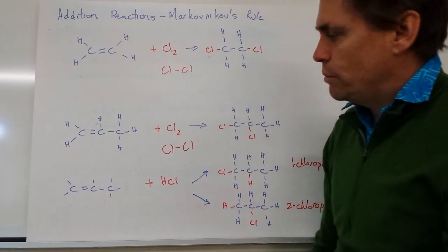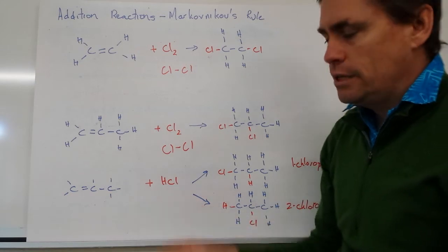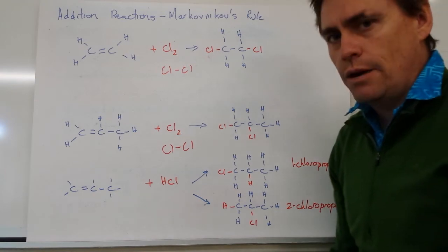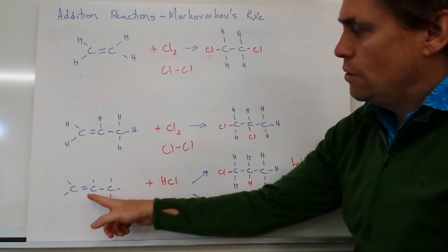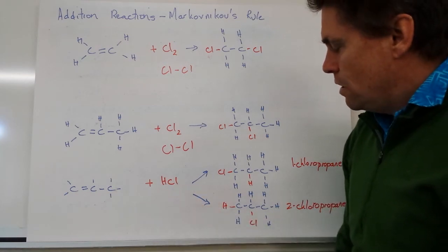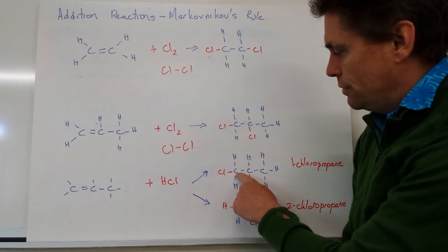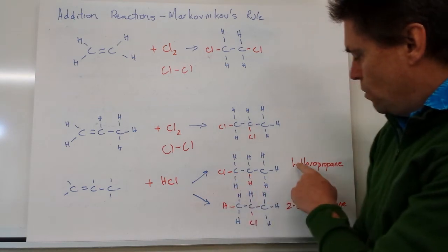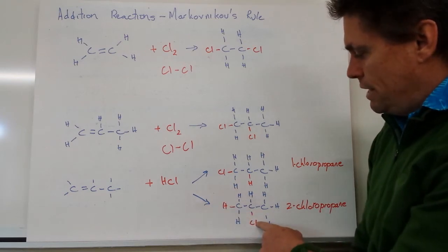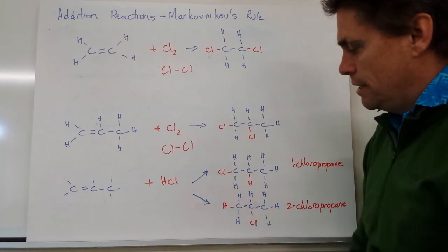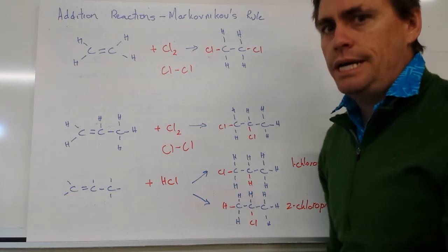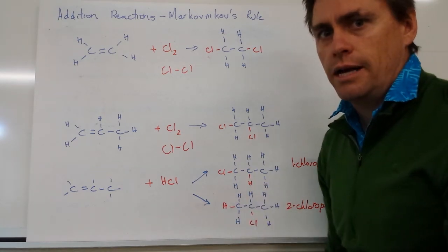However, what happens when we've got an unsymmetrical hydrocarbon reacting with an unsymmetrical reagent? We can get one of two possibilities. We've got our 1-propene again, and this time we're going to add hydrogen chloride to it. If the chlorine goes to carbon number 1, we form 1-chloropropane. If the chlorine goes to carbon number 2 and the hydrogen to carbon number 1, we form 2-chloropropane. So how do we predict which of these two molecules is more likely to occur?